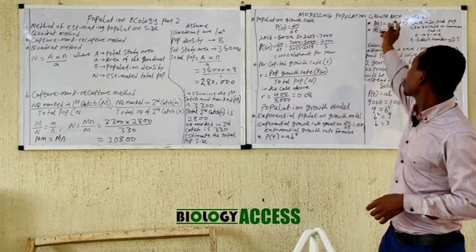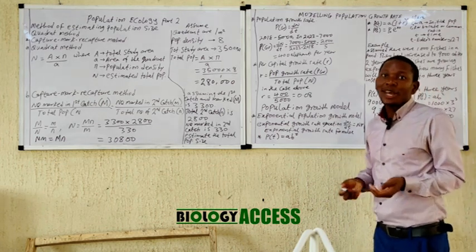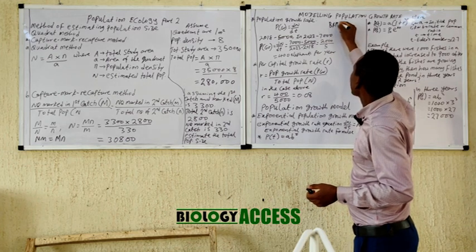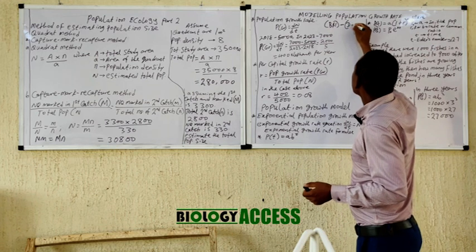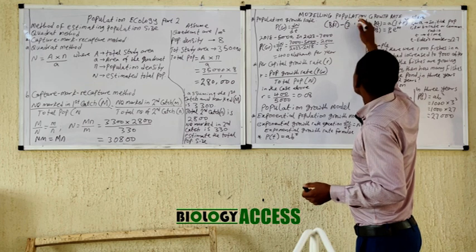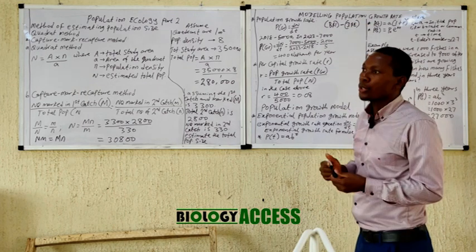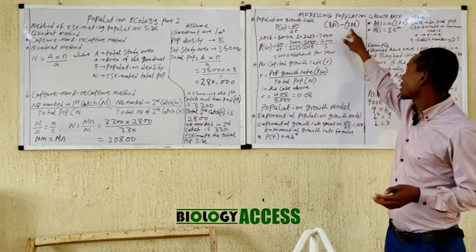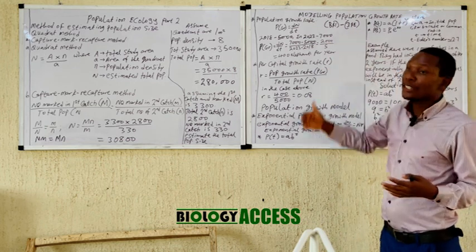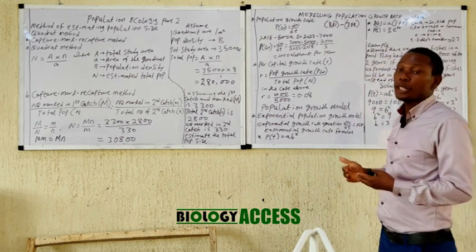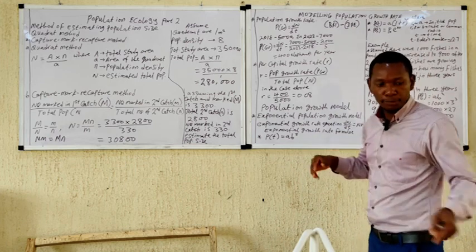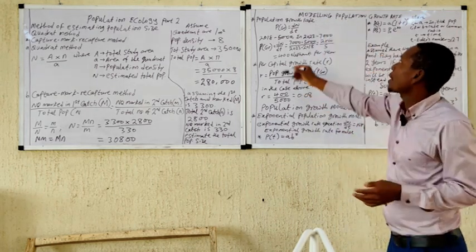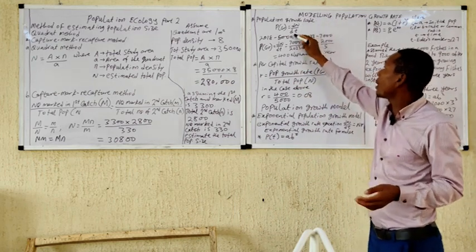We now move into modeling of population growth rates. Population growth rate involves: number of births plus immigration, minus number of deaths plus emigration. If the result is positive, the population is growing; if negative, there is population decline. The population growth rate is defined as the change in population size (ΔN) divided by the change in time (Δt).